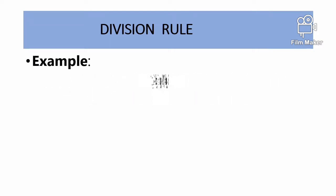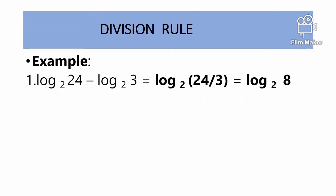Division Rule Example. Number 1: Logarithm base 2 of 24 minus logarithm base 2 of 3 equals logarithm base 2 of 24 divided by 3, which equals logarithm base 2 of 8.